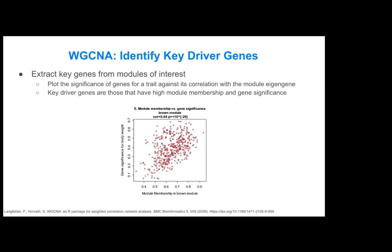Another key aspect of WGCNA is that you can look at specific genes from modules of interest by plotting gene significance for a trait against its correlation with the module eigengene. For example, plotting all genes in the brown module against their significance for body weight and their module membership — which is the correlation of a single gene with all other genes in the module. Genes with high module membership and high gene significance are key driver genes that may be responsible for driving pathway changes or processes of interest in your analysis.